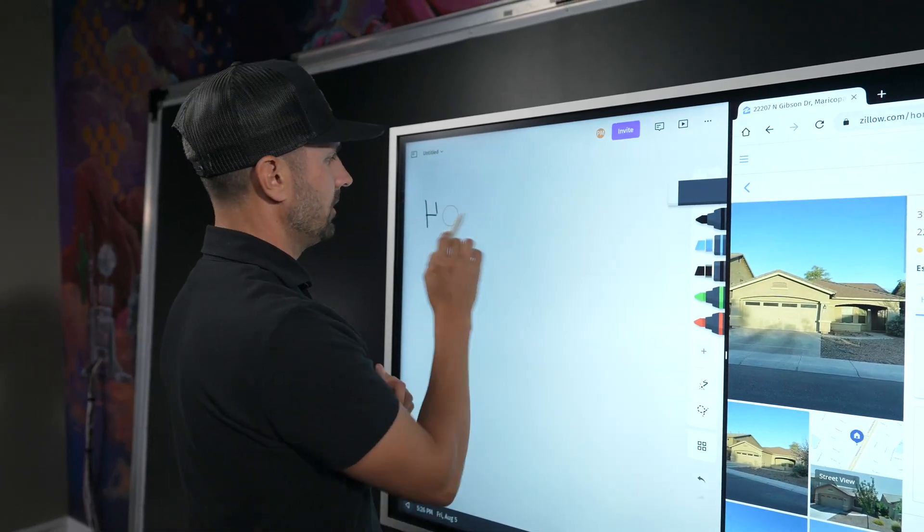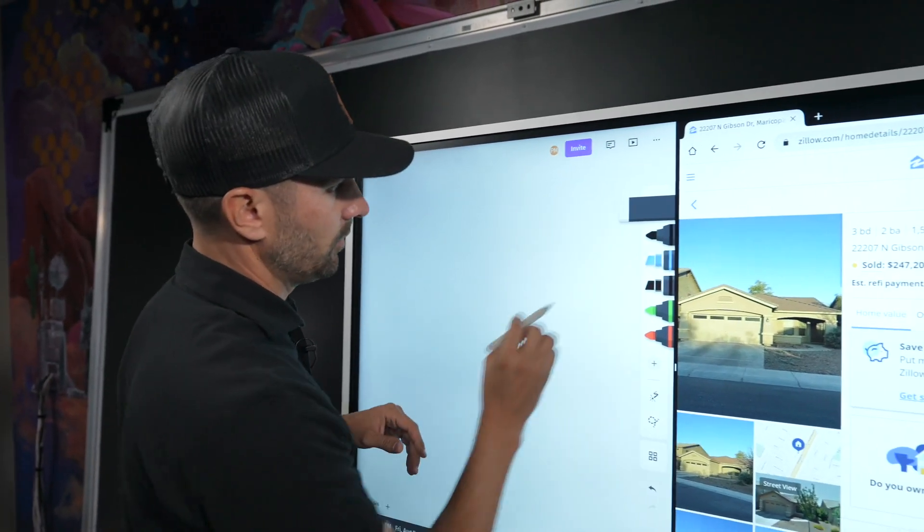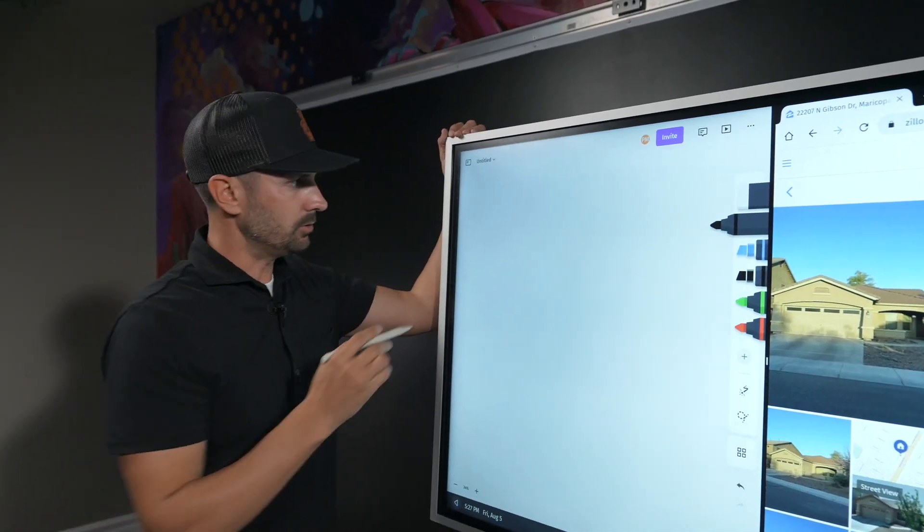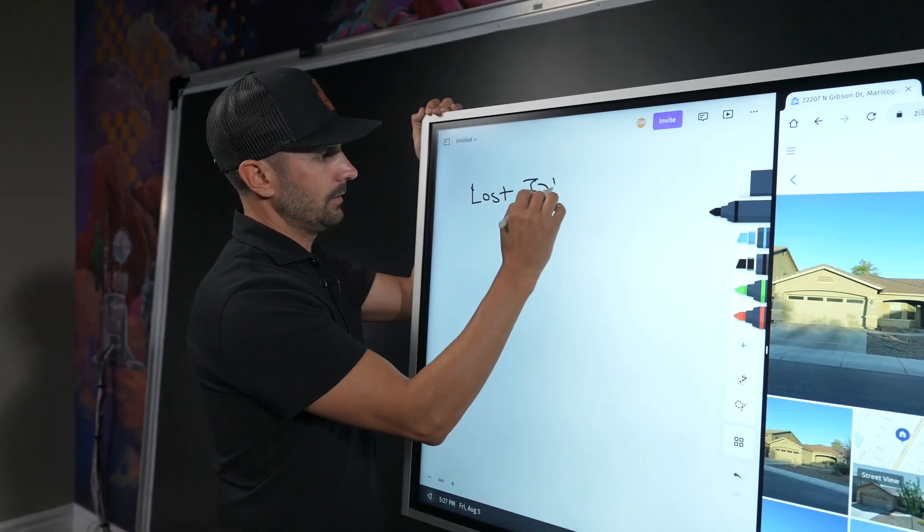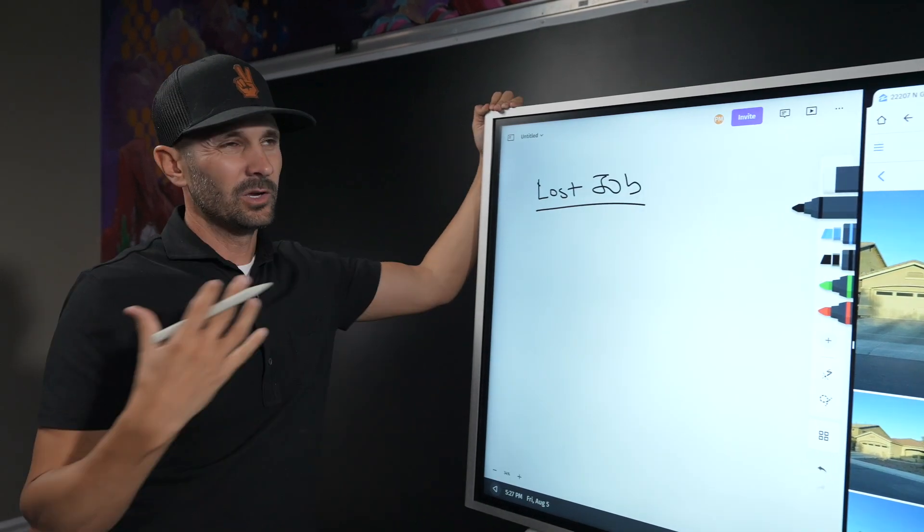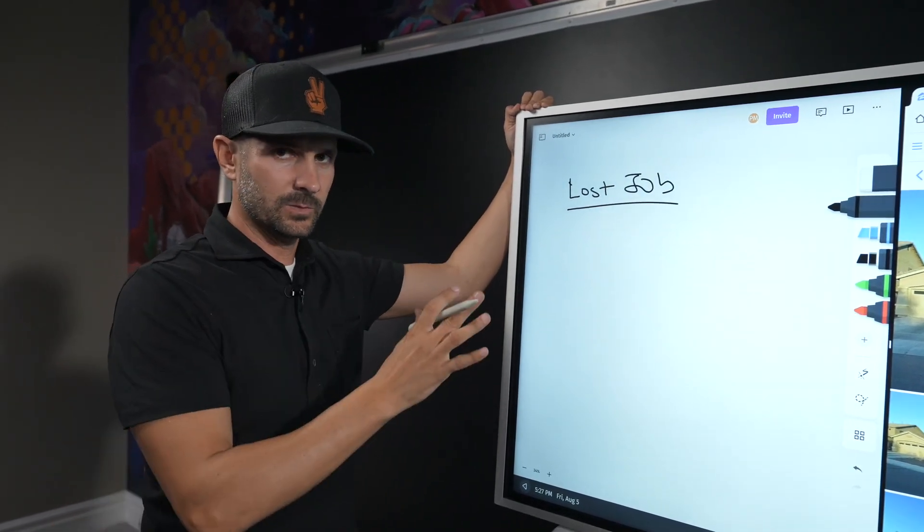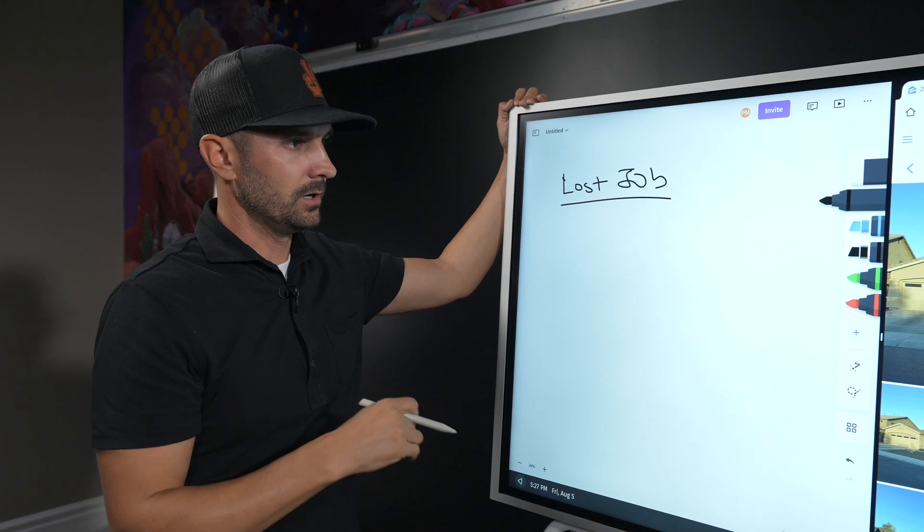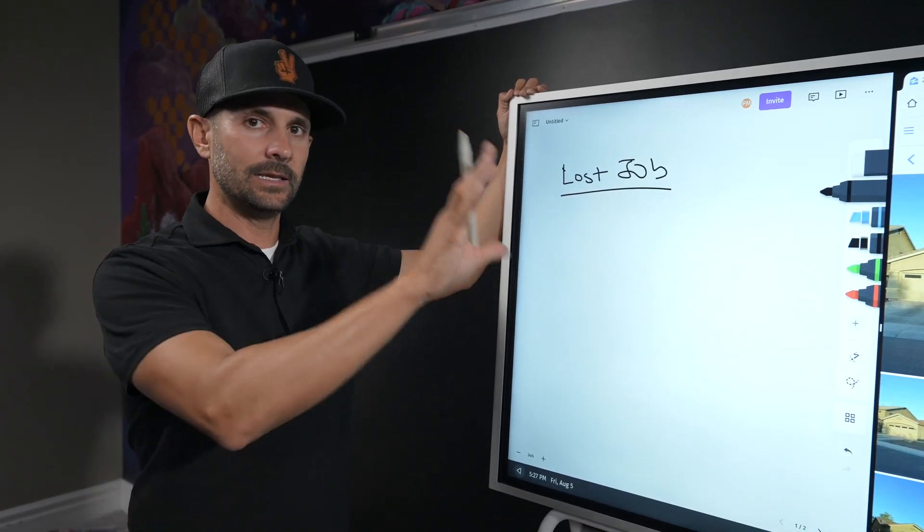Batchleads not only allows you to get the data of who is in foreclosure, but they also allow you to text through their platform. So the seller was in foreclosure. He lost his job. That was his main pain. He lost his job, couldn't make his house payment.